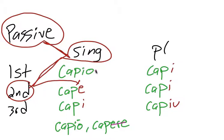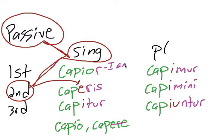Now we're going to add in our endings. So we have capior, caperis, capitur, capimur, capimini, and capiuntur. It looks like fourth except for the e in the passive. When we're translating these, capior would be I am captured or taken, caperis you are captured, capitur he or she is captured, capimur we are captured, capimini you all are captured, and capiuntur they are captured.